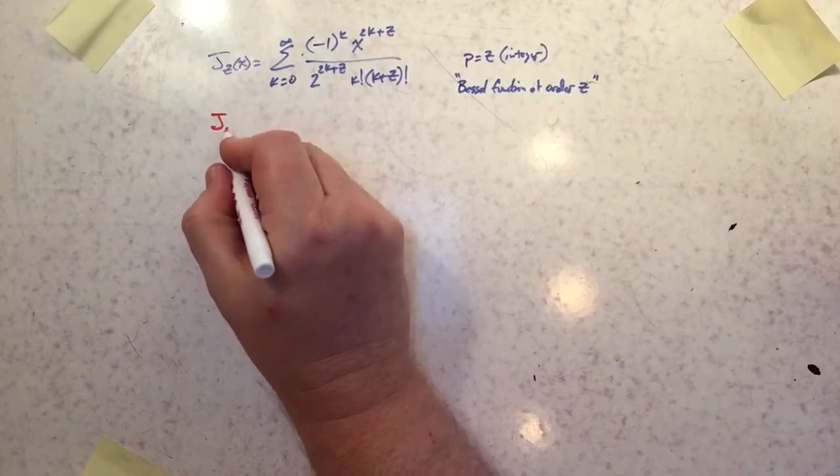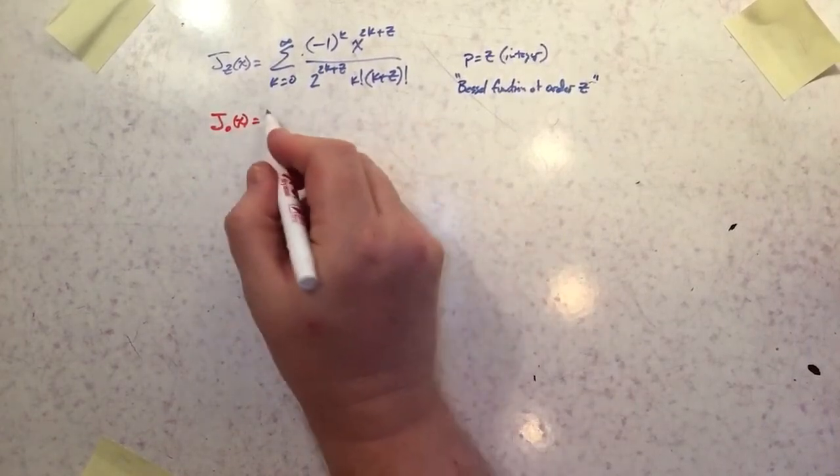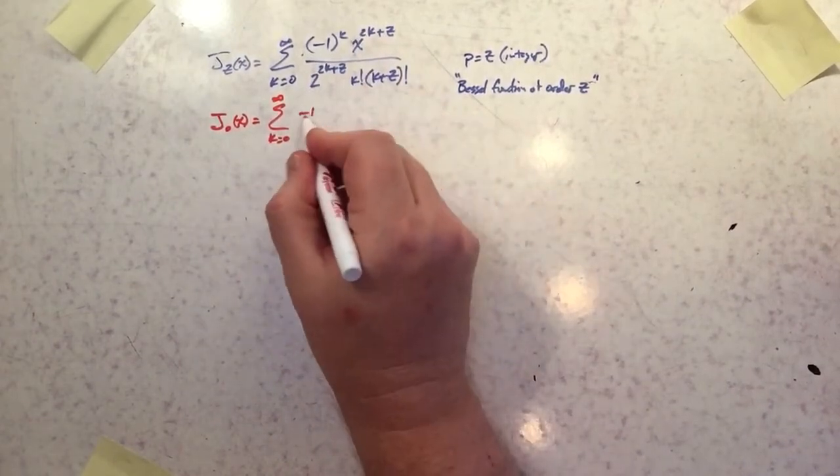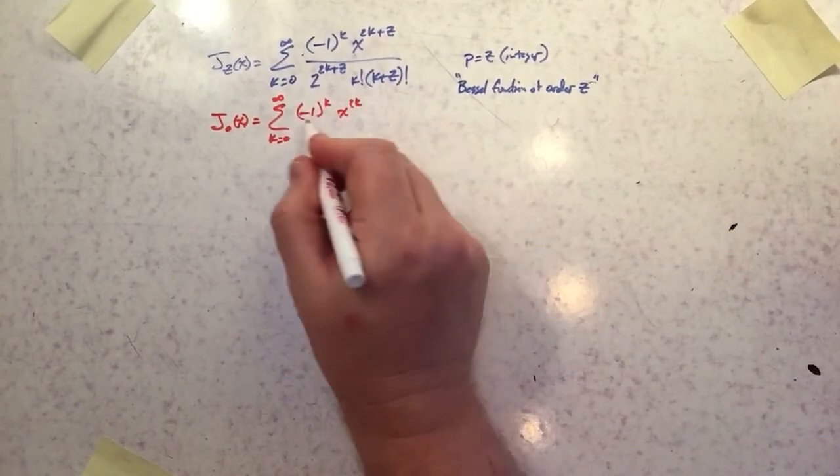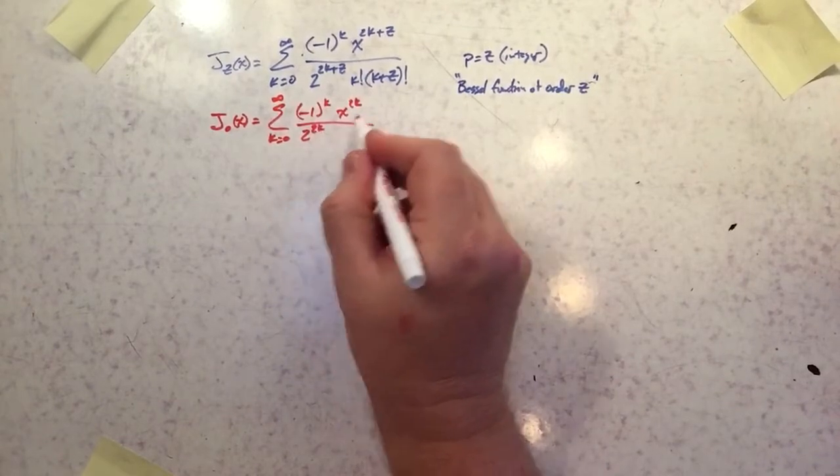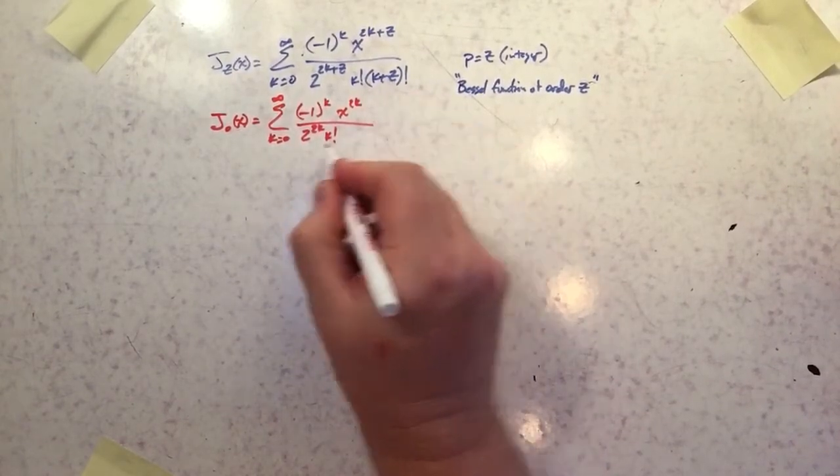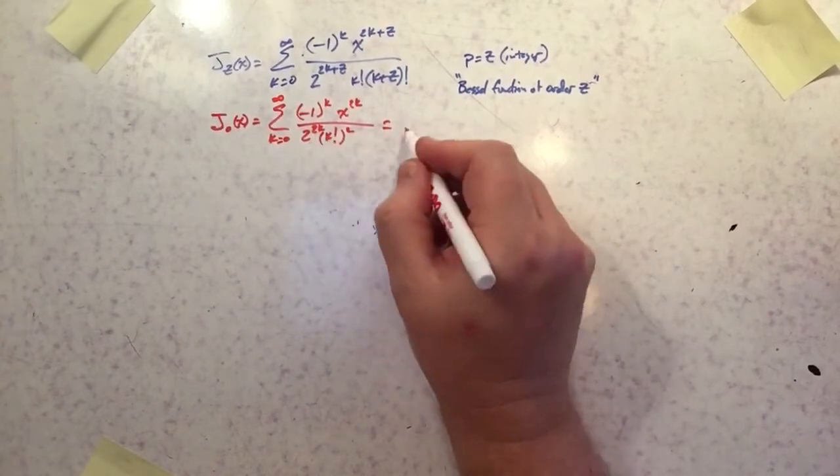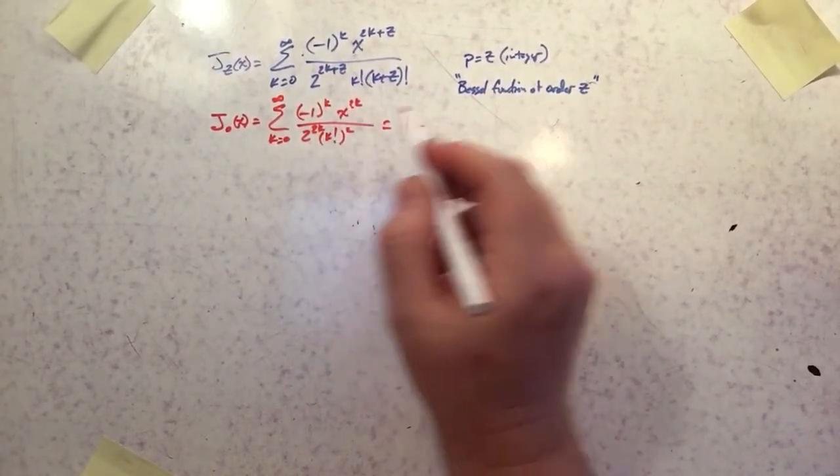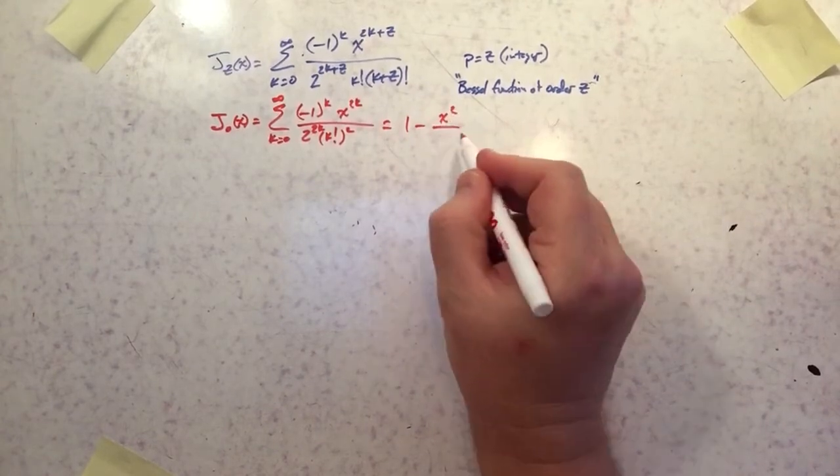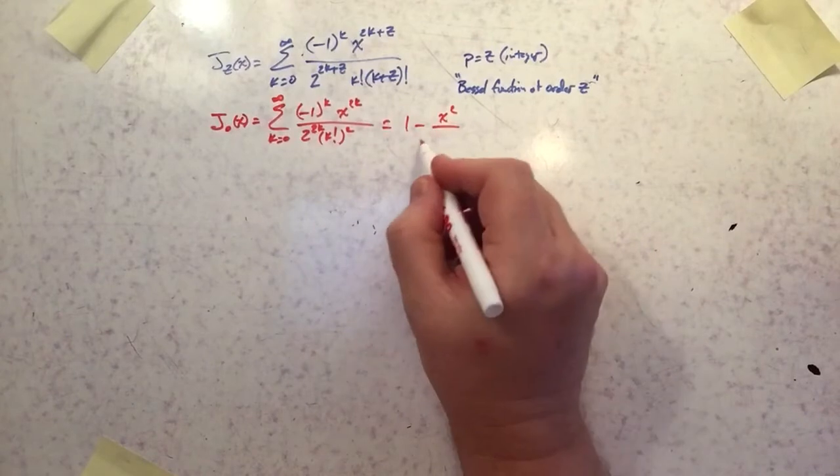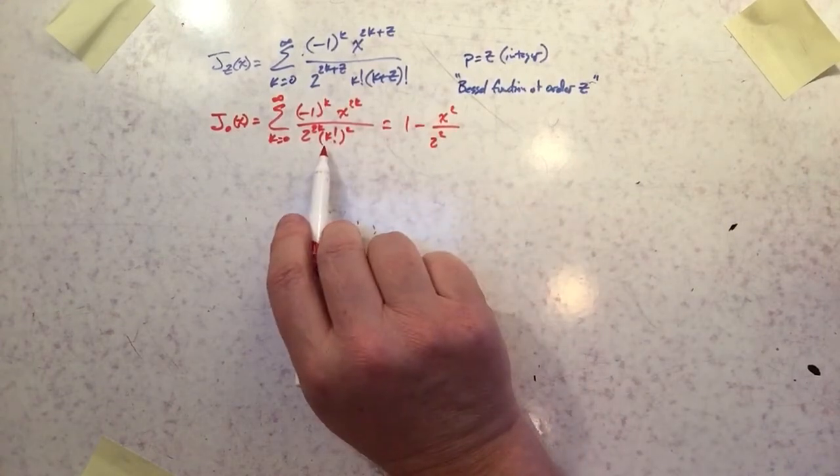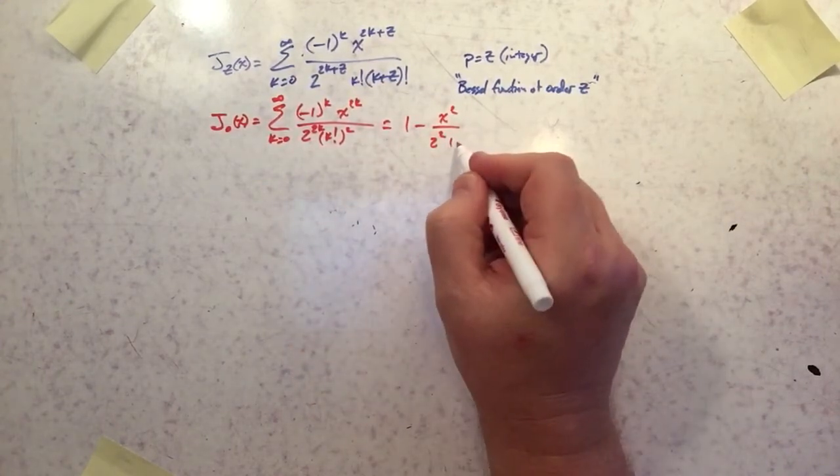So let's look at J of 0. That means in the summation k equals 0 to infinity, I'm just going to replace all the z's by 0. So it's negative 1 to the k. It's going to be x to the 2k divided by 2 to the 2k and then times k factorial times another k factorial. So that's just k factorial squared. The second term is x squared divided by 2 squared times 1 factorial squared.